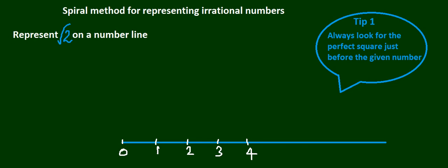Hi there, welcome back. In this video, let's see how we can represent irrational numbers on a number line. This is a special method called the spiral method, and you'll soon know why it's so called. This method is mostly used when the number under the square root sign is a whole number.